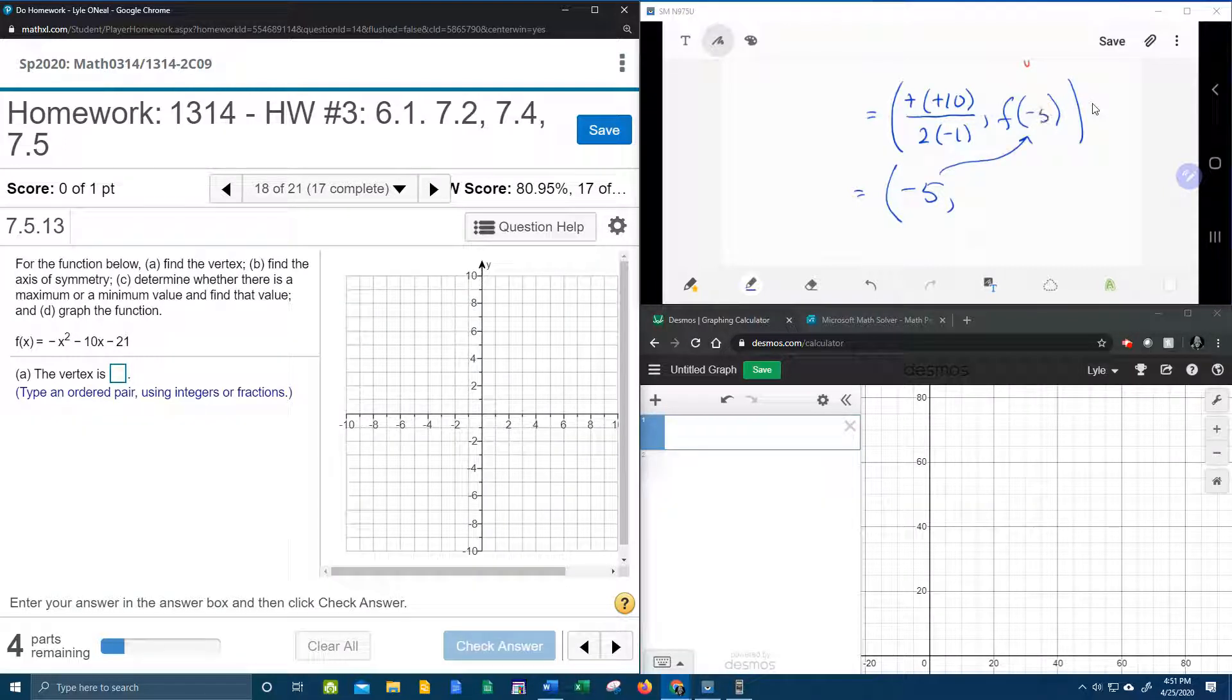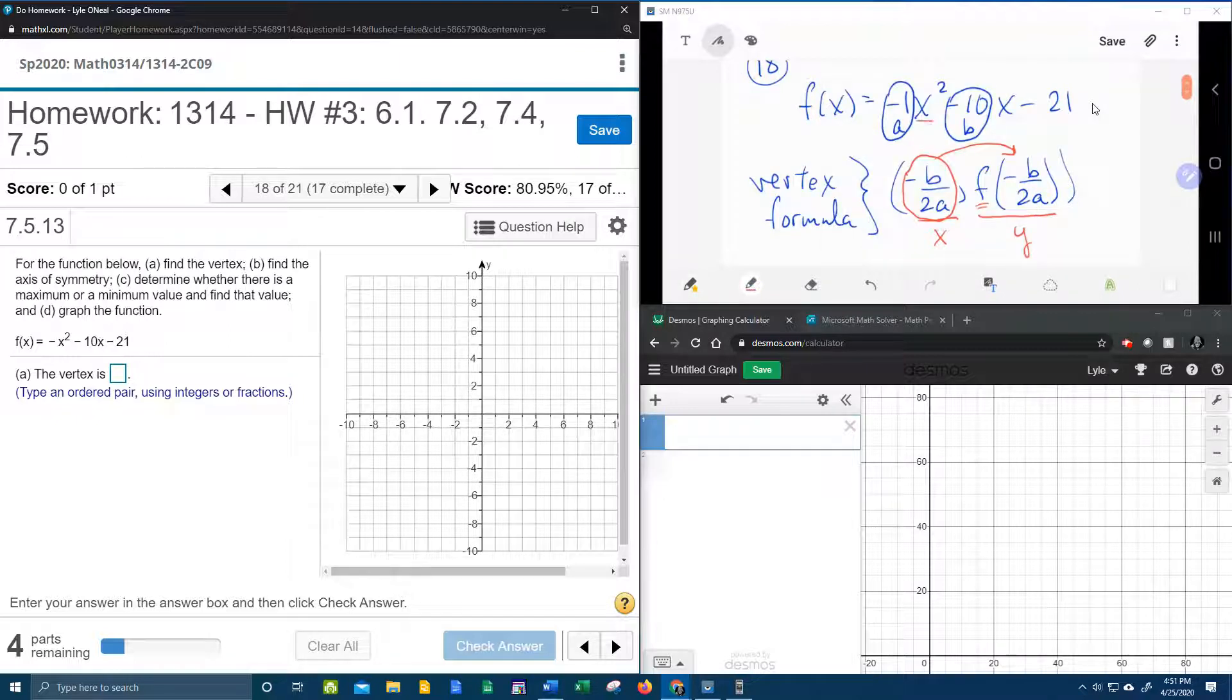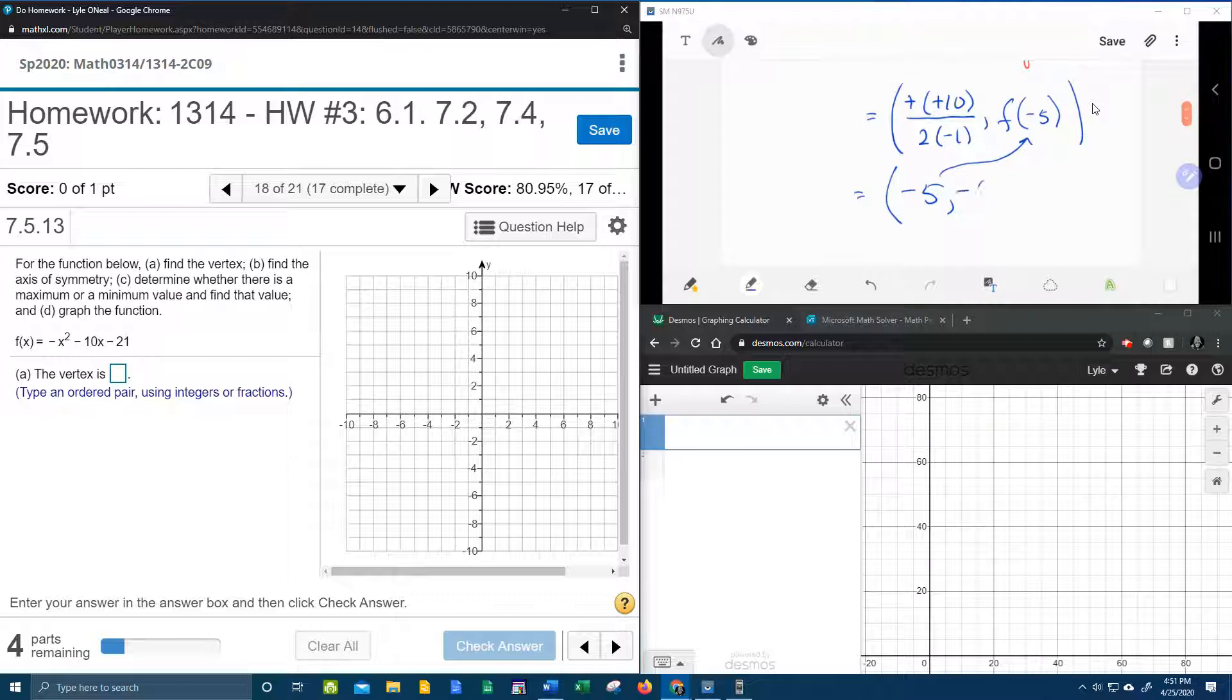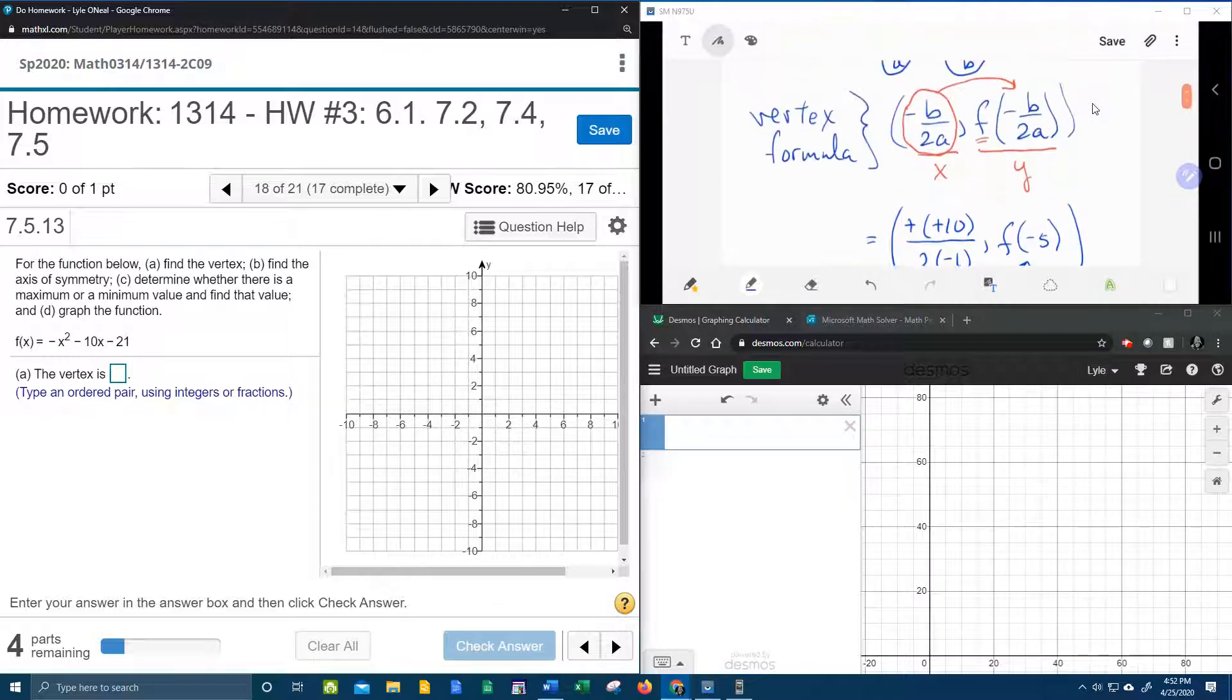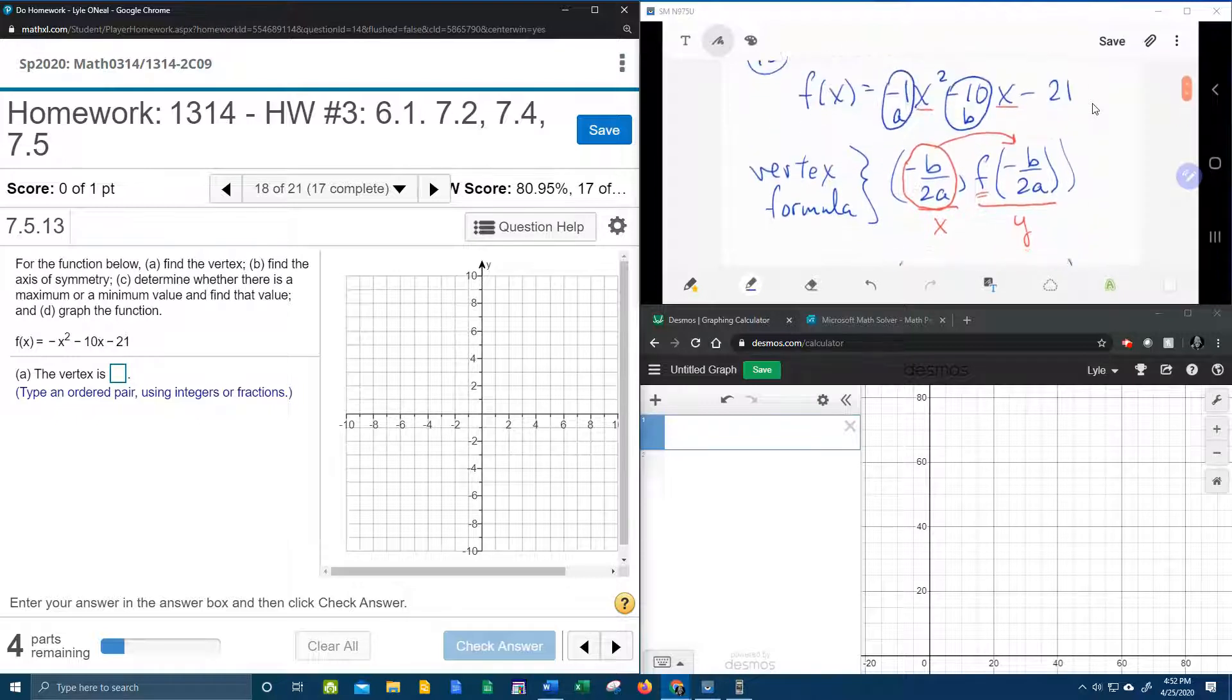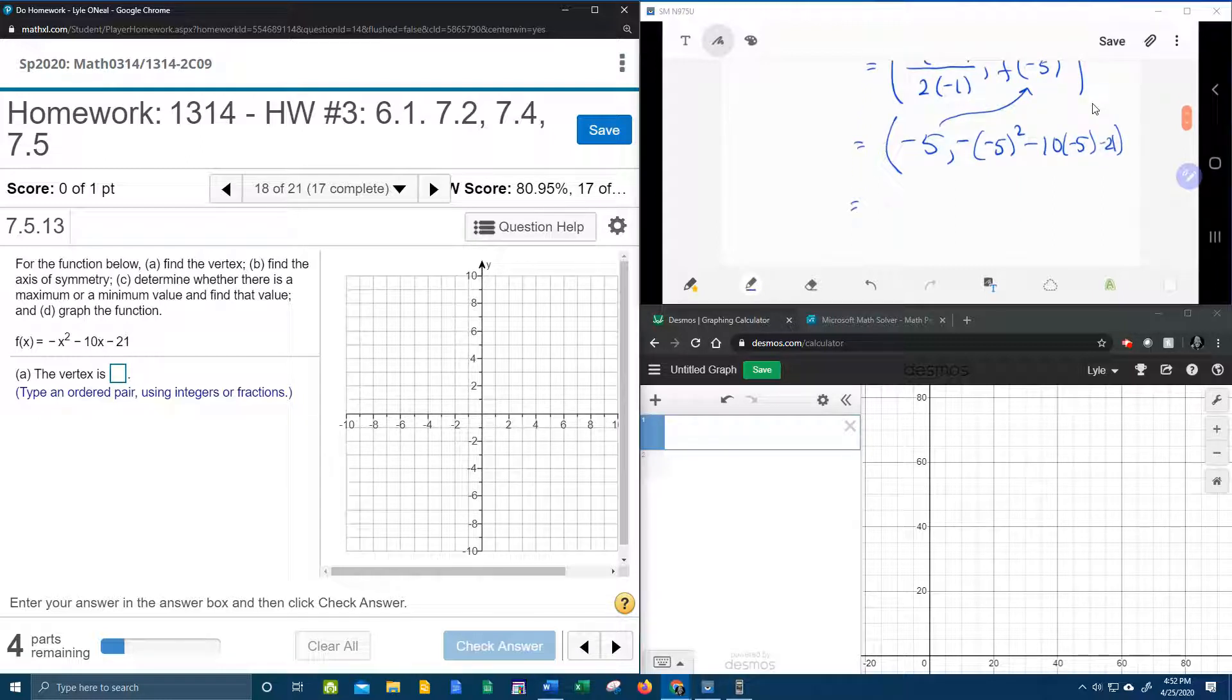And then that tells me that I'm going to do f of negative 5 for the y coordinate of the vertex. And so what does that mean? Well that means to come up here to our function and replace each x with negative 5. So that's going to be negative, negative 5 squared minus 10 times negative 5 minus 21.